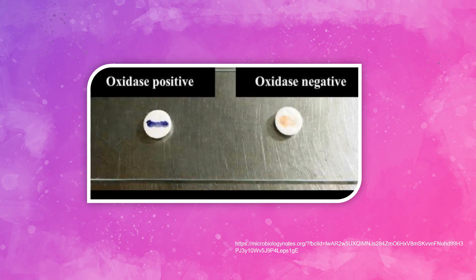Here's a picture of what an oxidase positive test looks like and an oxidase negative test. On the left side, you can see this darkish blue or deep purple color—that would be a positive oxidase. On the right side, it's an oxidase negative. There's no deep purple or deep blue color change.